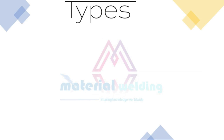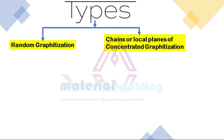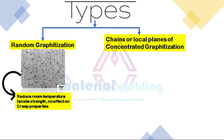Let us know the types of graphitization. Graphitization is divided into two parts. The first is random graphitization. The second is chains or local planes of concentrated graphitization. This form can result in a significant reduction in load-bearing capability while increasing the potential for brittle fracture along that plane. Random graphitization, on the other hand, reduces room temperature tensile strength but has no effect on creep properties.